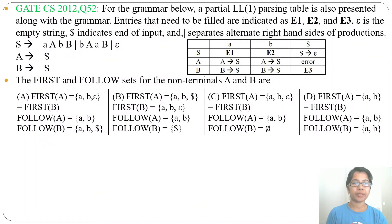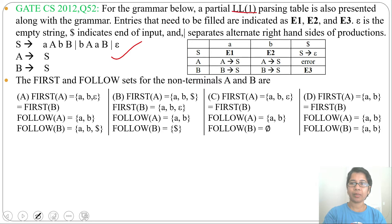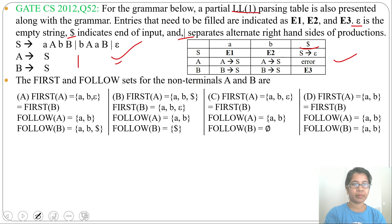Let's solve a previous question on syntax analysis. This question was asked in GATE CS 2012 — question number 52 and question number 53 are linked. Let's first solve question number 52. A grammar is given and a partial LL(1) parse table is given. The grammar description includes a separator, dollar as the end marker, and epsilon as the empty string.